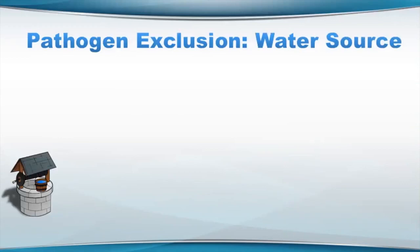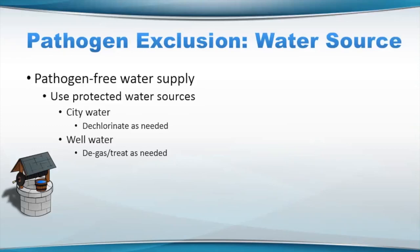For your water source, when we talk about pathogen exclusion, a pathogen-free water supply is really ideal. You want to use what we will call protected water sources — water sources that don't have pathogens that will cause specific problems with your animals. City water typically will have chlorine or chloramines to disinfect, and you want to dechlorinate if you use them — those should be fairly protected. Well water, if it's fairly deep, is typically considered a good clean water source and may require treatment or degassing. If you are using groundwater or open ocean water, they may not necessarily be pathogen-excluded, so you may have potential pathogens that can get onto your facility or your animals.